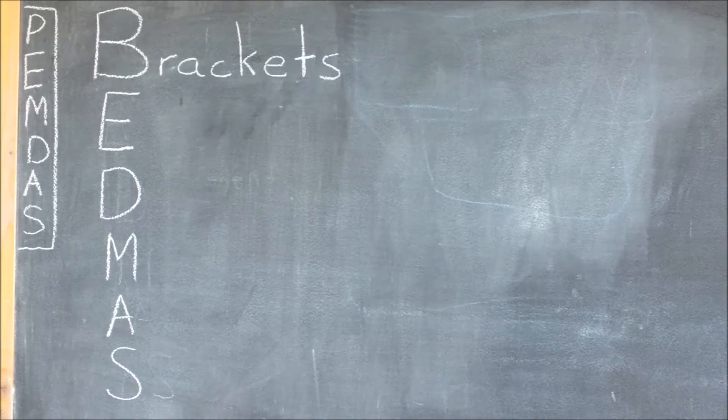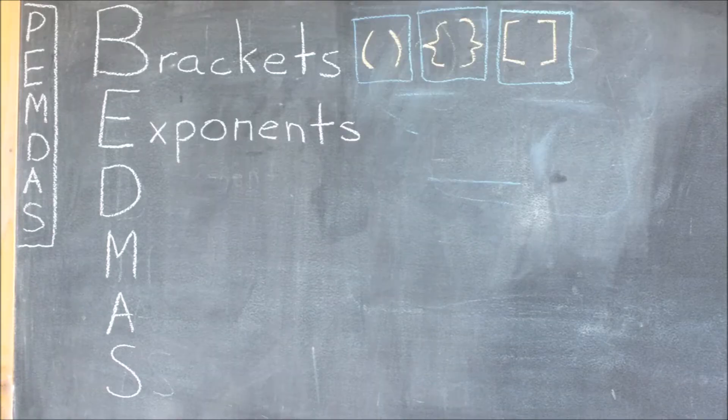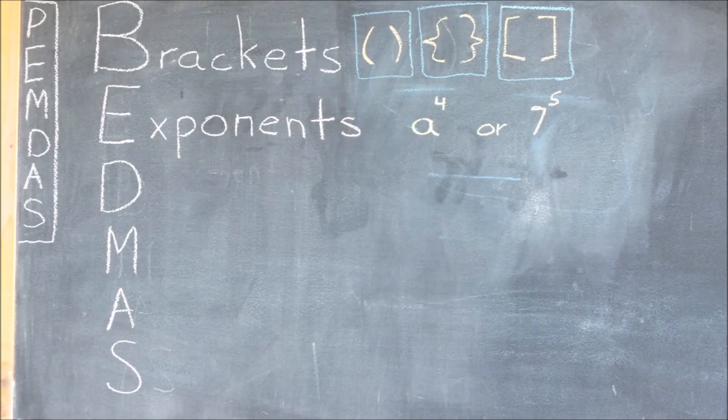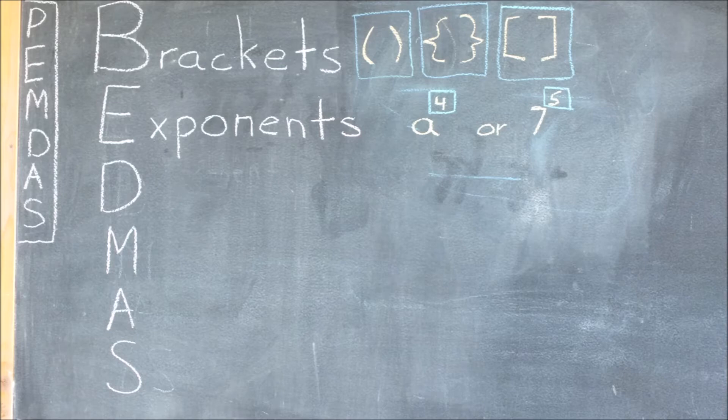First of all, for B, we have brackets. Next up, we have exponents. They can look like this, or this. Keep in mind that they are the small number written on top of a number.